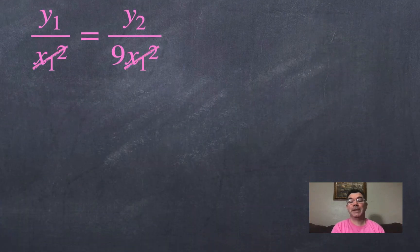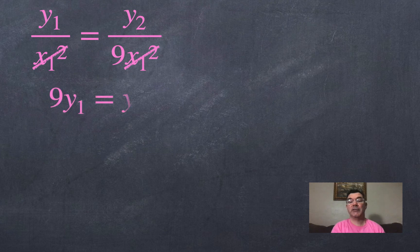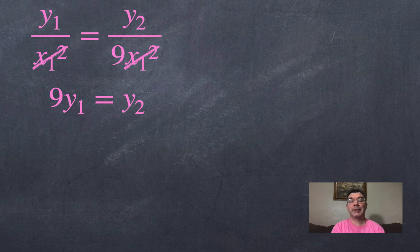And I can divide x1 squared out of both of those because it does show up in the denominator of both. And I get that 9y1 equals y2. So what that means is the second y is going to be 9 times the first y. So if x is tripled, then y gets multiplied by 9, which makes sense because 3 squared is 9.